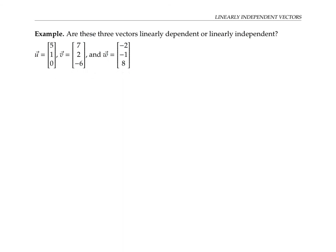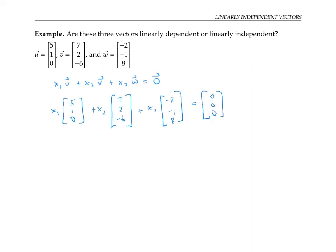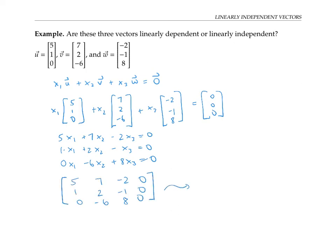Let's see if three vectors u, v, and w are linearly dependent or linearly independent. One way to do that is to write the equation x1 times u plus x2 times v plus x3 times w equals the zero vector, and see if we can find solutions for x1, x2, and x3 that are not all zeros. I can rewrite this as a system of linear equations and solve it by writing down the augmented matrix and converting to reduced row echelon form. The final answer shows that the only solution is x1 equals zero, x2 equals zero, and x3 equals zero — so these three vectors are in fact linearly independent.